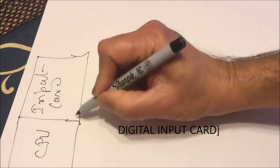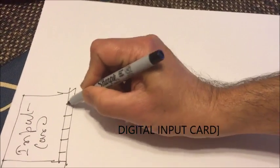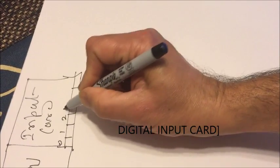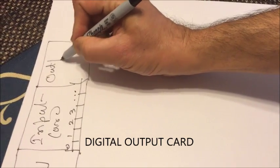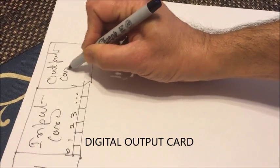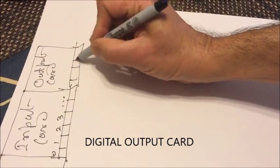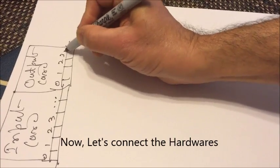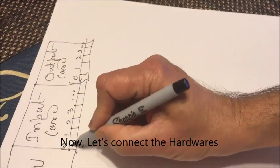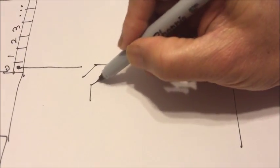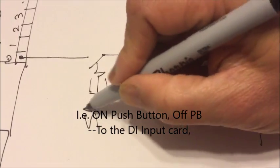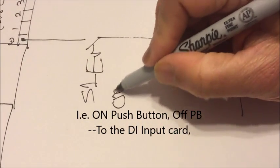Let's connect all of our inputs and outputs now. So the on push button S1 we are connecting to PLC input 0. Similarly the off push button to input 1